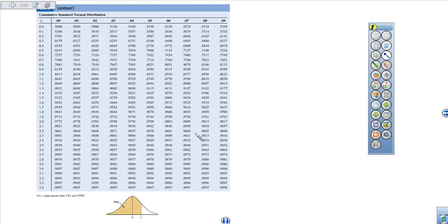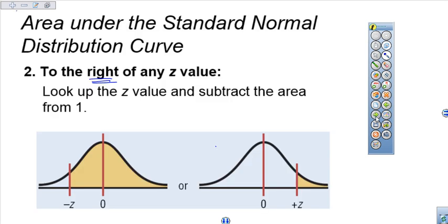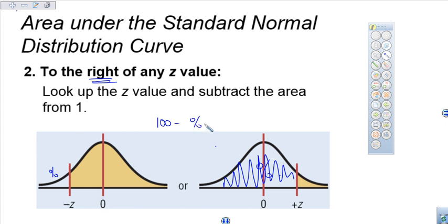So same thing here. These are only to the left. So when we come back to our problem and we realize we're taking a look at the area to the right, it's still the same process. We're still going to find out the percent for this area, but then what we'll do is we'll take that percent and subtract it. We'll take 100 minus our percent and we'll find our answer.